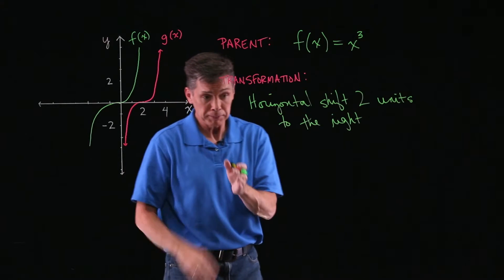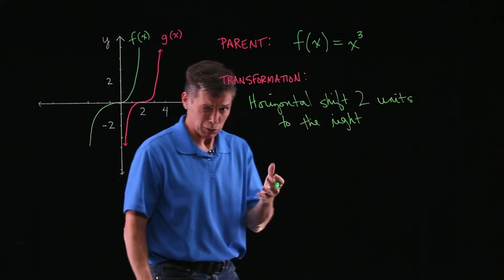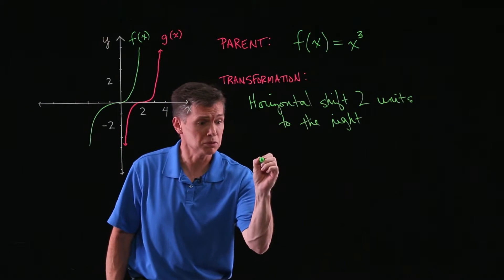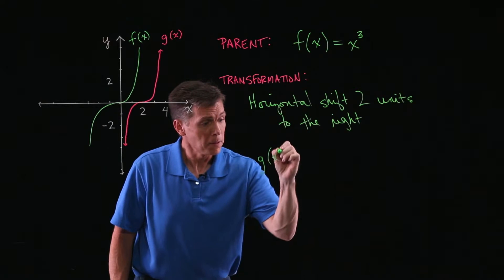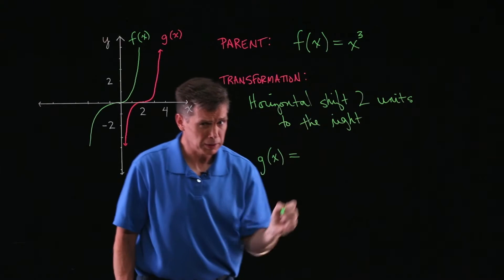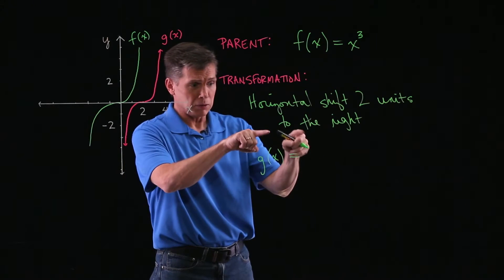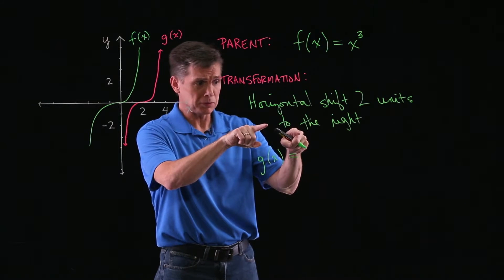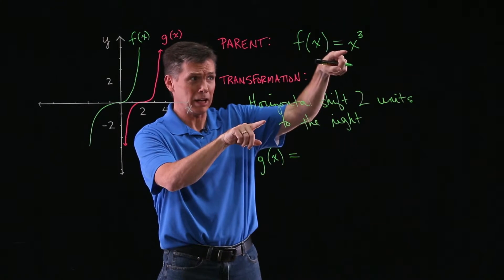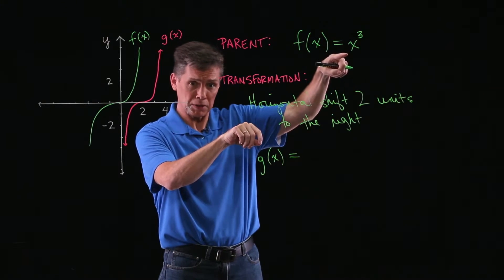And then finally, they did ask us to write an equation for this function. So for me, g of x. And I'm going to come up with my answer here by thinking about how the particular transformation that's involved manifests itself in the algebra from the parent function.